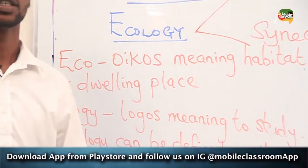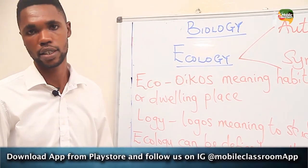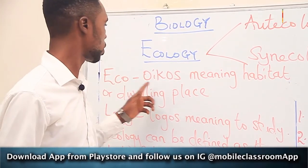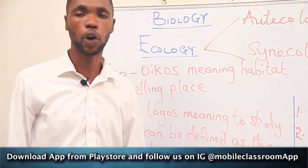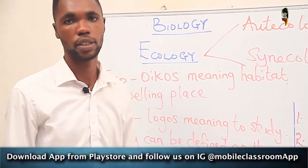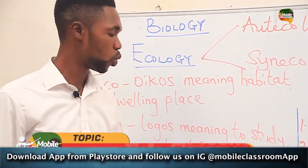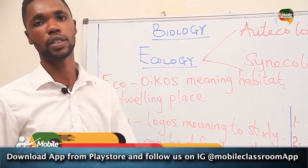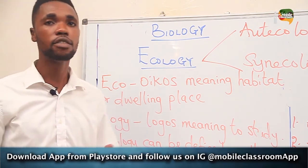Ecology is derived from two Greek words: oikos and logos. In biology, we know that the suffix -logy comes from the Greek word logos, meaning to study. And oikos is also a Greek word.